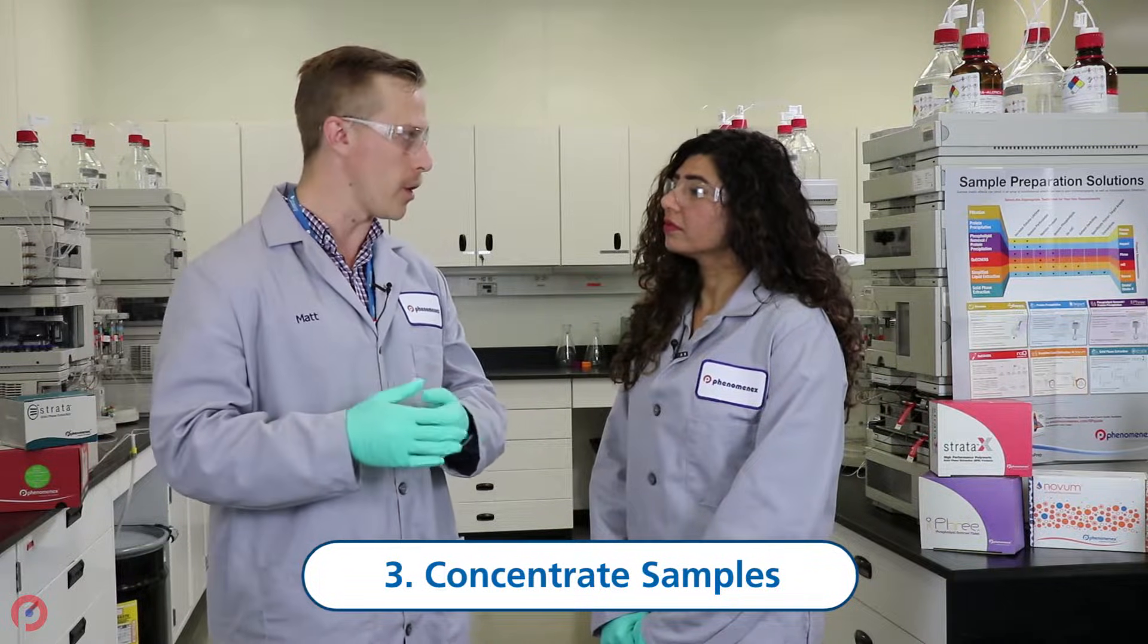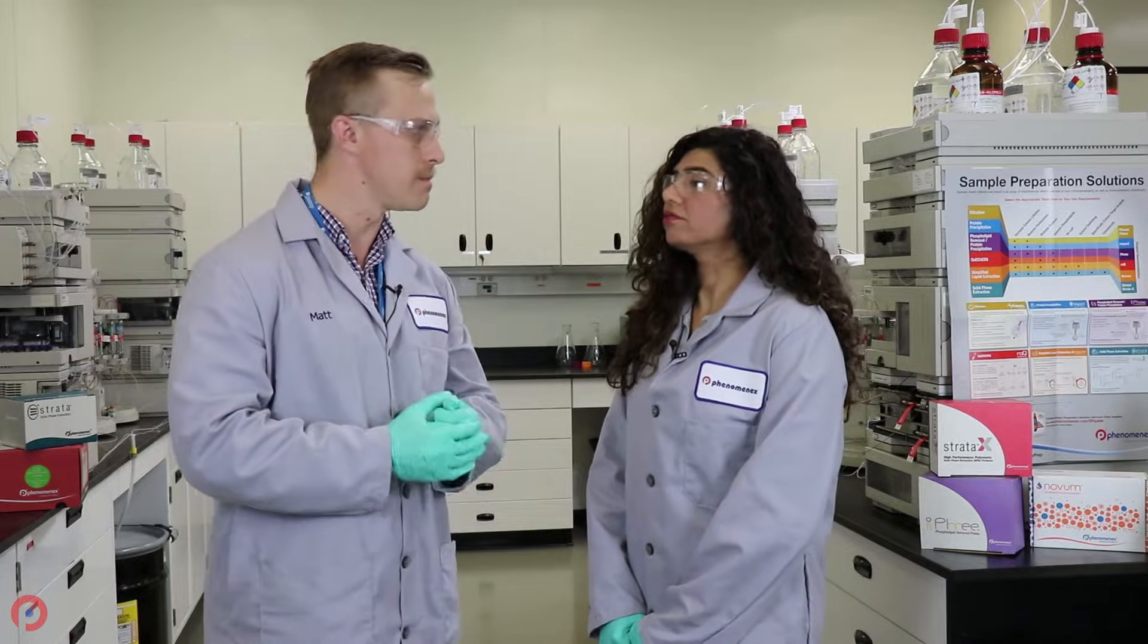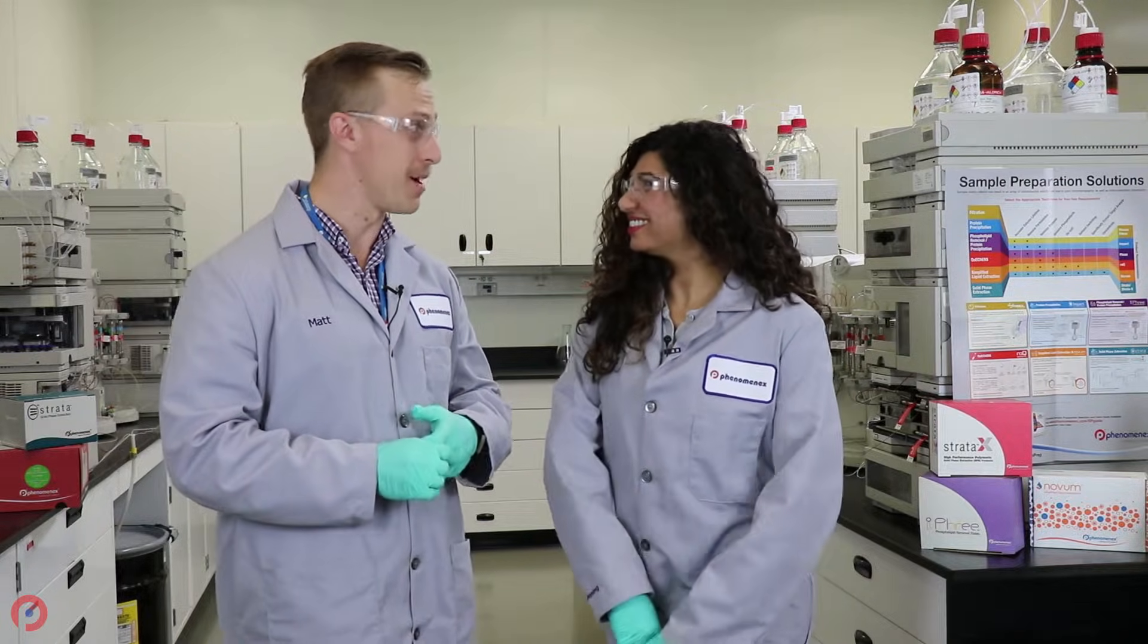We might start off with one mil of urine and then we're eluting off with 200 microliters of organic solvent. Typically with something like liquid-liquid, you're usually having to use three or four times the amount of organic solvent just to extract your analyte from your sample in general. So, concentration, batch process, cleaner samples. Cool. Can you show us? I'd love to.